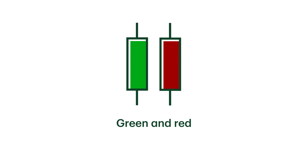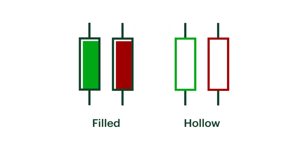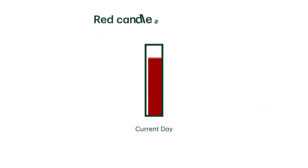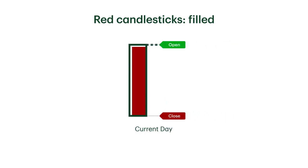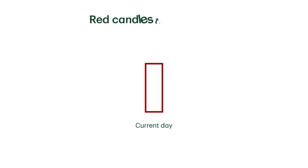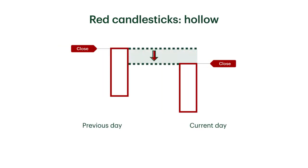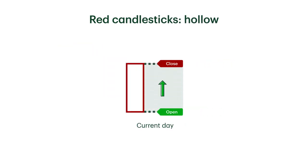In WebBroker, candlesticks can be green or red and hollow or filled depending on the price change. When a red candlestick is filled, it means that its closing price was lower than the previous day's closing price and lower than today's opening price. When it's hollow, it means that its closing price was lower than the previous day's closing price but higher than today's opening price.